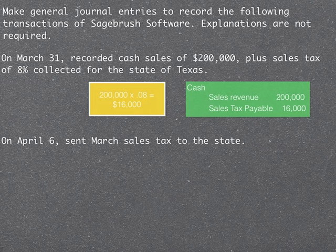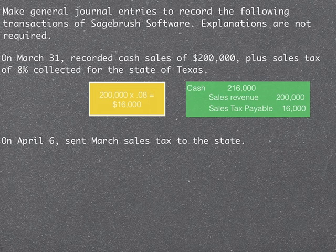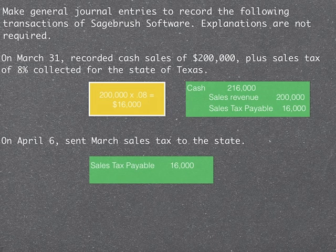Therefore, we're collecting two hundred sixteen thousand dollars in cash in total, which we debit to Cash. Then, seven days later on April 6th, we sent the March sales tax to the state. To record that, we credit Cash for sixteen thousand dollars and debit Sales Tax Payable for sixteen thousand dollars to remove that liability from the books.